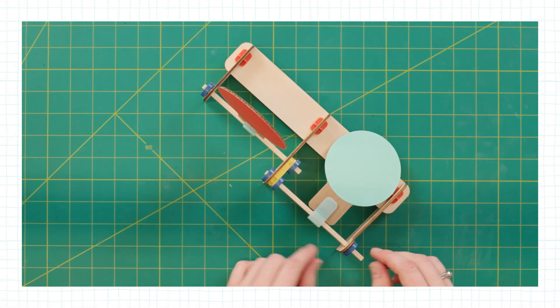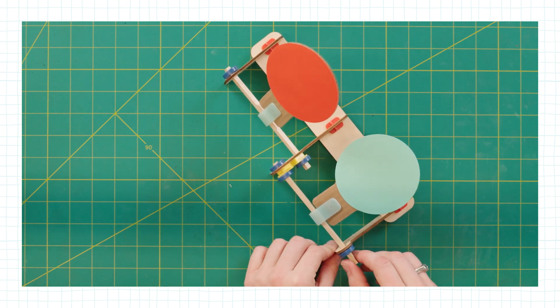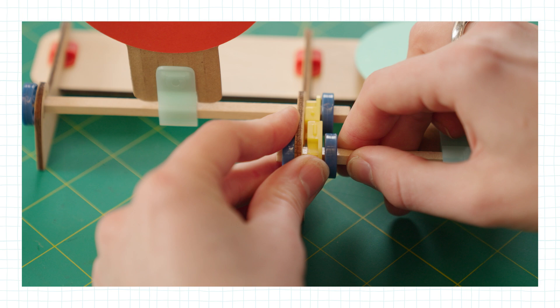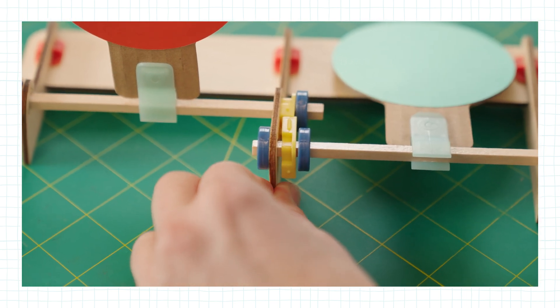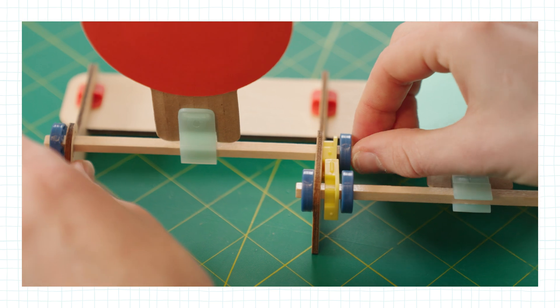Okay, so here's some troubleshooting tips. So if your targets aren't flipping really easily, like they don't want to turn, they feel kind of stuck, just go ahead and loosen those blue circles. So they can rotate freely.